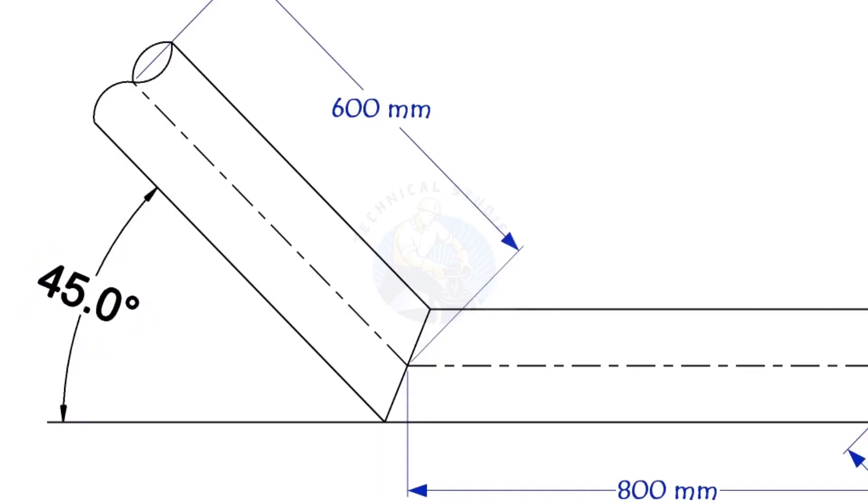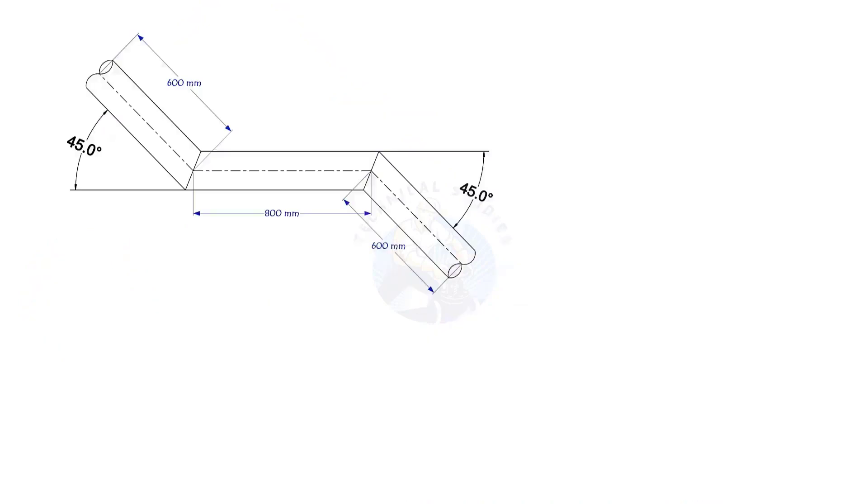This method is suitable for cutback of any degree. The outside diameter of a 6 inch pipe is 168.3 millimeters.